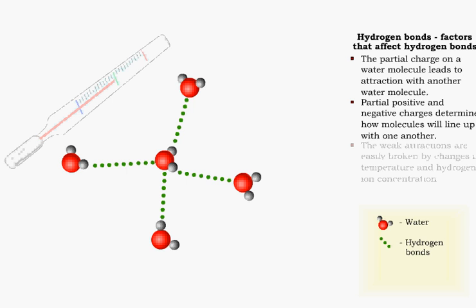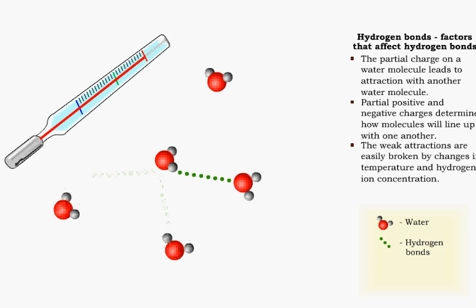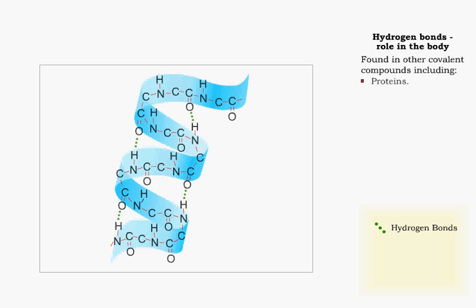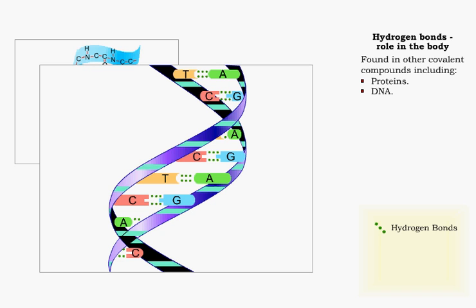Hydrogen bonds are susceptible to breakage when there are changes in temperature or hydrogen ion concentration. Hydrogen bonds are found in other covalent compounds. Part of the structure of a protein molecule is maintained by hydrogen bonds between adjacent sections of that molecule. The double helix of DNA is also stabilized by hydrogen bonds.